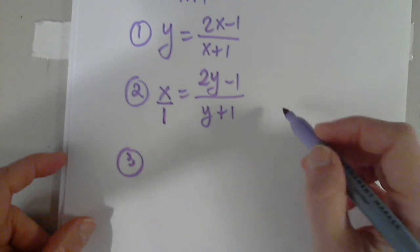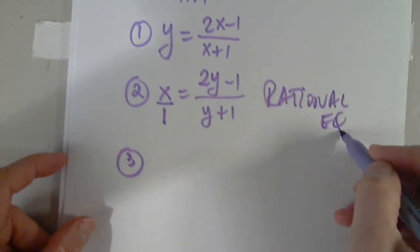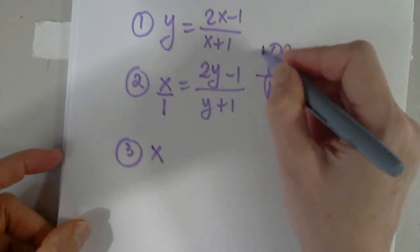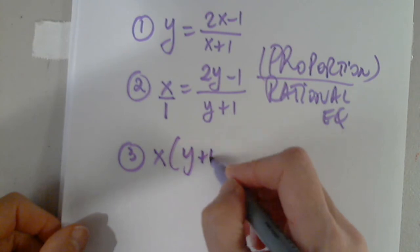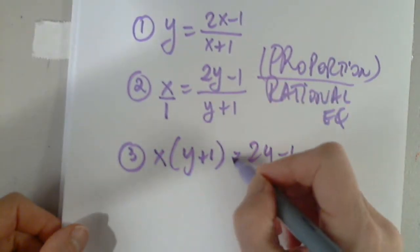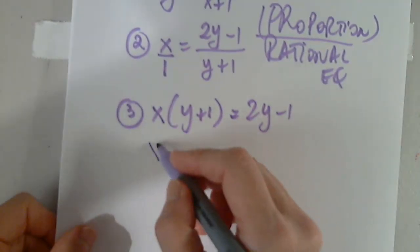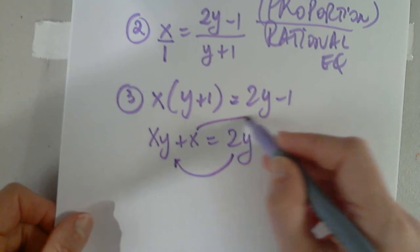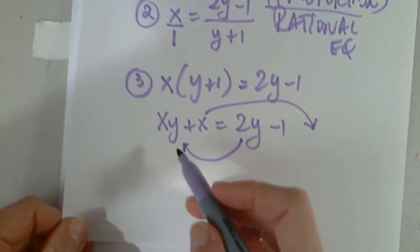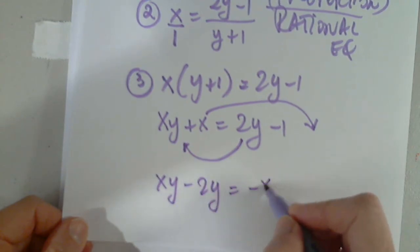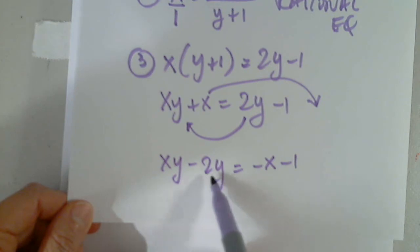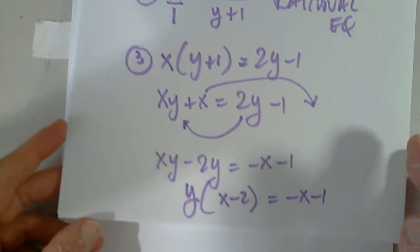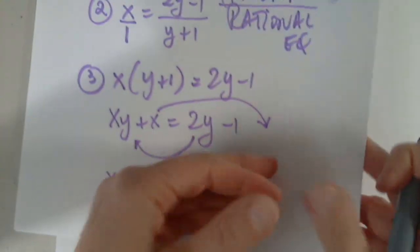In step 3, because it's a rational equation, we will cross-multiply. It's a proportion, also. Cross-multiply, x multiplied by y plus 1 equals this product, which is 2y minus 1. I will distribute, because I have to solve for y. xy plus x equals 2y minus 1. Again, I'm solving for y. I'm going to move this term here and this term here. And I have xy minus 2y equals negative x minus 1. Because I want to solve for y, but these are not like terms. I have to factor out y. And I divide by x minus 2. And that is it.